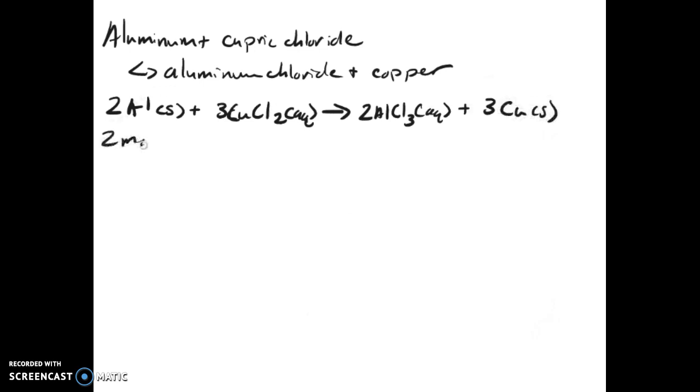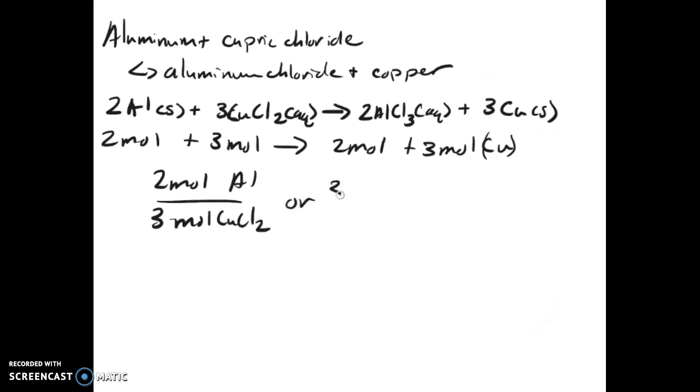Basically what this means is that there's two moles of aluminum plus three moles of the cupric chloride, yielding two moles of the aluminum chloride and three moles of copper. So out of this you can build a couple of different ratios. The first one is that two moles of aluminum gives you three moles of your cupric chloride, or the reverse of that, three moles of cupric chloride gives you two moles of aluminum.